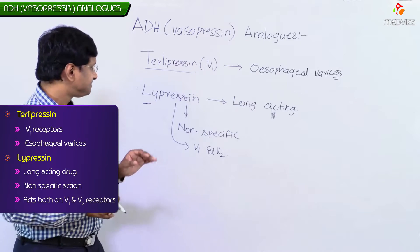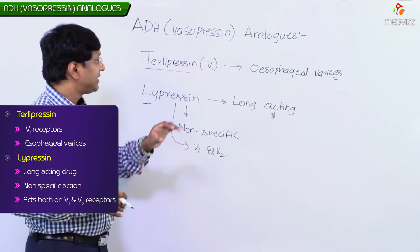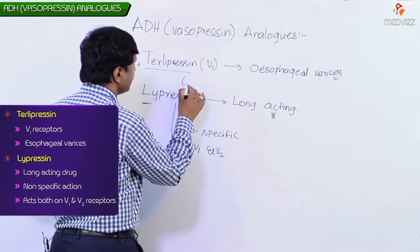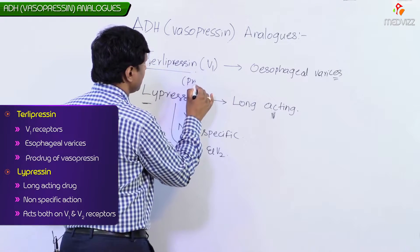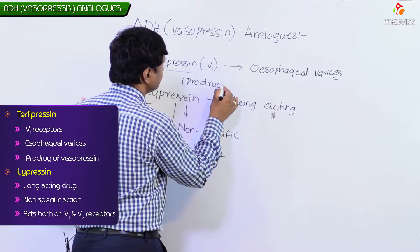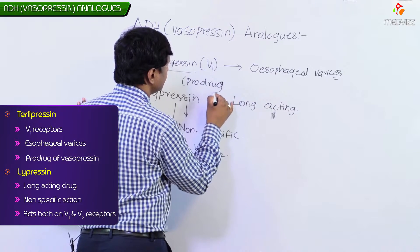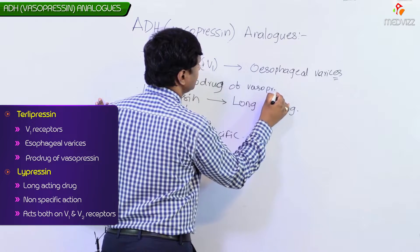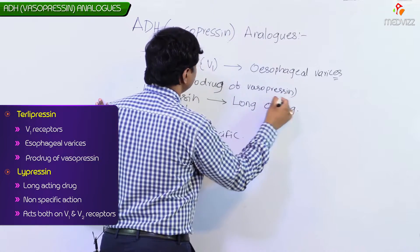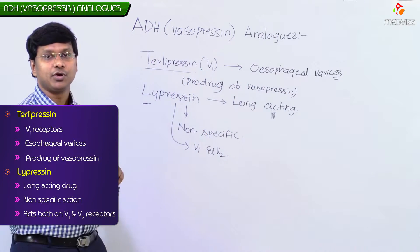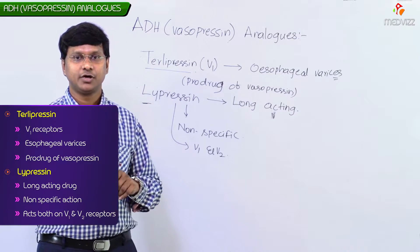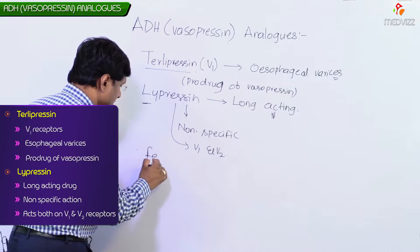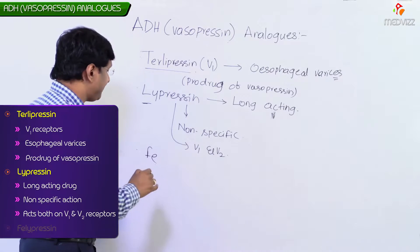Terlipressin is a prodrug of vasopressin. Next we have another ADH analogue called Felipressin.